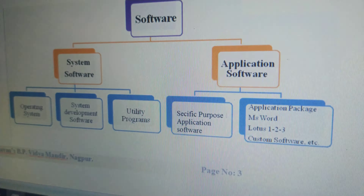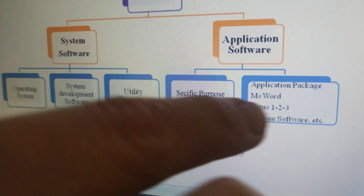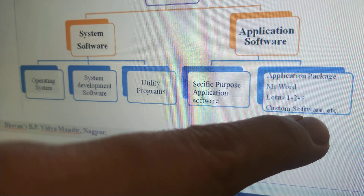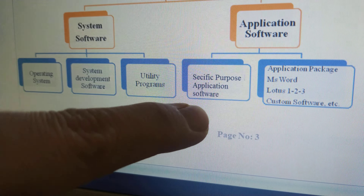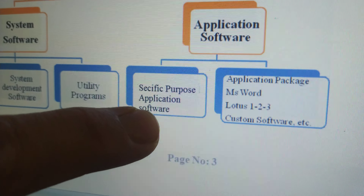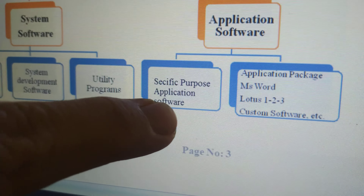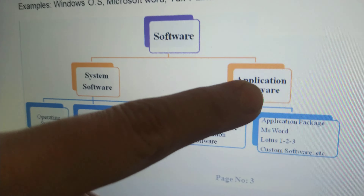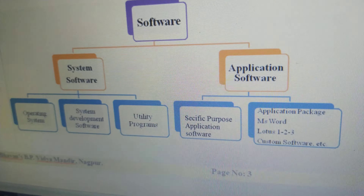Application software is for a specific purpose. There are two types of application packages: MS Word, Lotus 1-2-3, and custom software. Is it clear? This is all about today's topic.